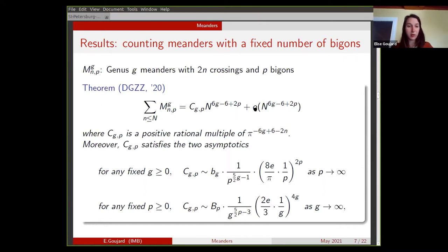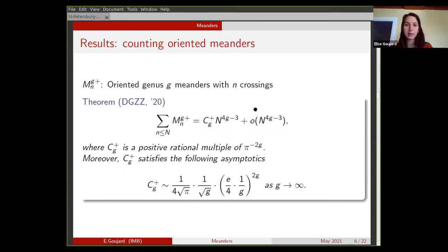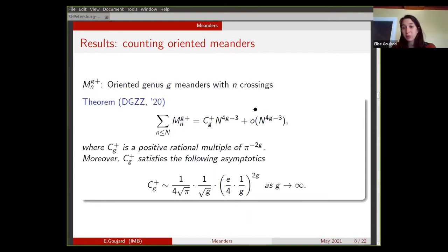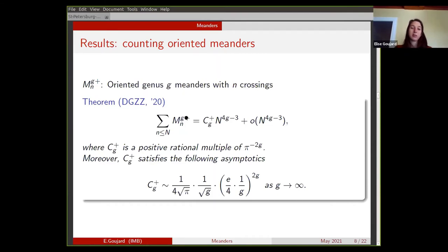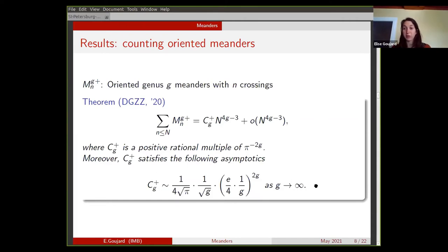What happens for oriented meanders? What is nice in this case is that there are no bigons, since all faces have degree 4k, so there is no combinatorial constraint other than the orientability condition. The number of oriented genus g meanders goes as n^{4g-3}, and the constant is explicit — a positive rational multiple of π^{-2g}. We know how to compute the asymptotic of this constant as g tends to infinity.